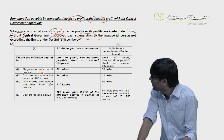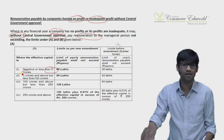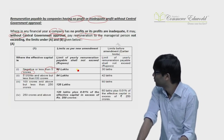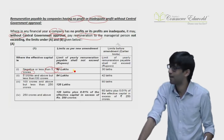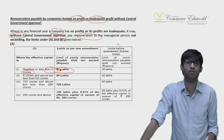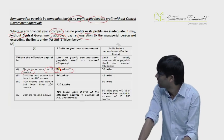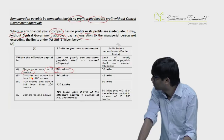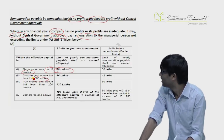As per the new limits: if the effective capital is negative or less than 5 crores, the maximum manager's remuneration is 60 lakhs. If the effective capital is more than or equal to 5 crores but less than 10 crores, then the maximum manager's remuneration is 84 lakhs.